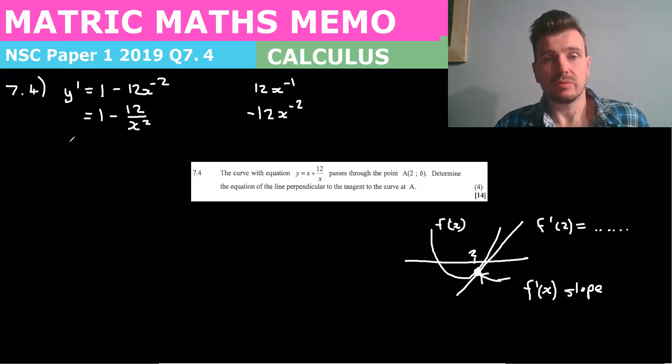What you could do now is find the slope of the tangent at that point, which would be I substitute in two because the point is two. So the slope where x equals two...